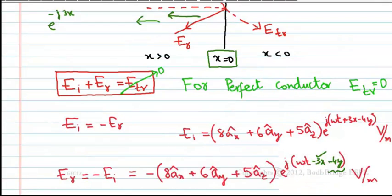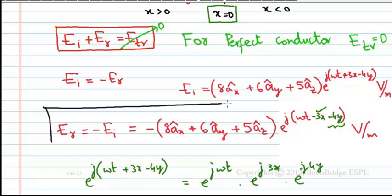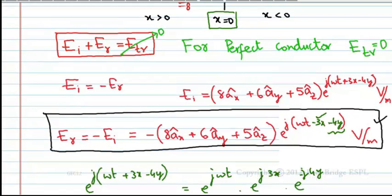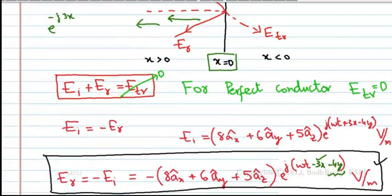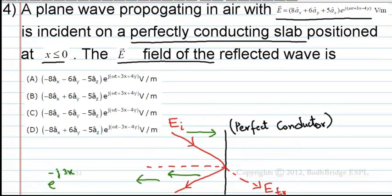Therefore, the final answer for the reflected E-field is −8ax − 6ay − 5az multiplied by e^(jωt − 3x − 4y) V/m, which corresponds to option C. Option C is the correct answer.